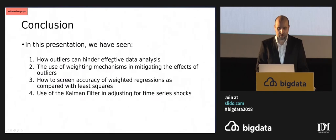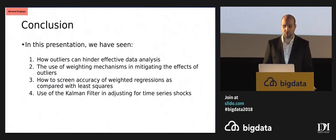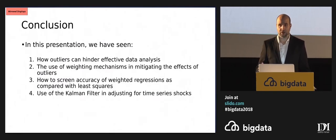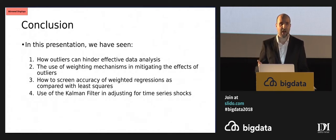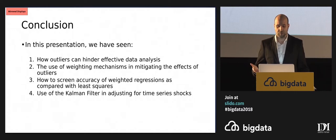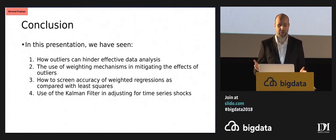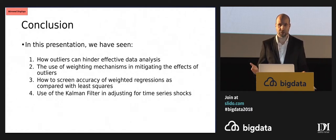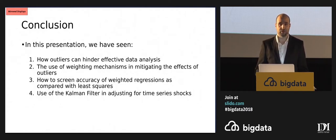To conclude the presentation: we've seen how outliers can hinder effective data analysis, but how we can use a weighting mechanism to mitigate the effects of that. We saw how we can screen the accuracy of those weighted regressions compared to least squares or linear regression. And we also saw how we can use the Kalman filter to adjust for time series shocks.